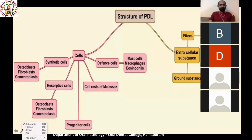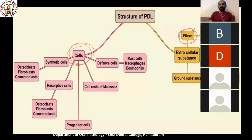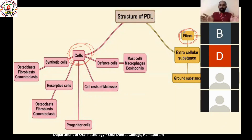The structure of the periodontal ligament basically comprises two things: cells and fibers. I would compare the periodontal ligament to a mixed fruit jam. The gel portion of the jam corresponds to the ground substance, and within this gel the mixed fruits correspond to the cells.